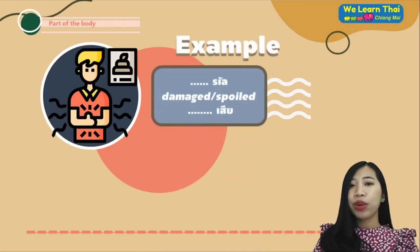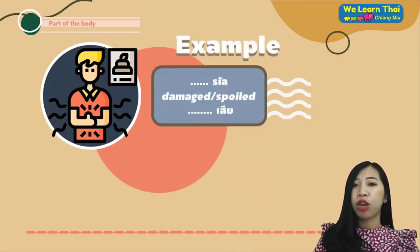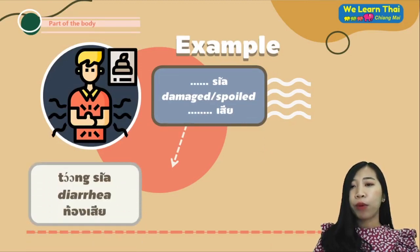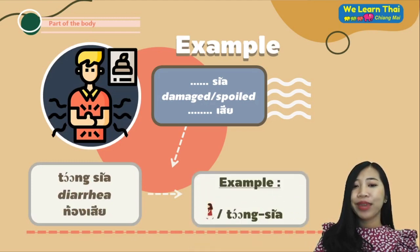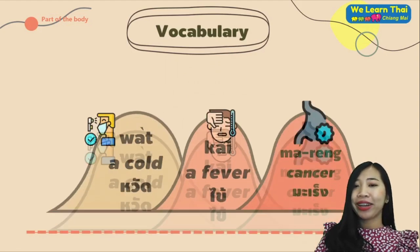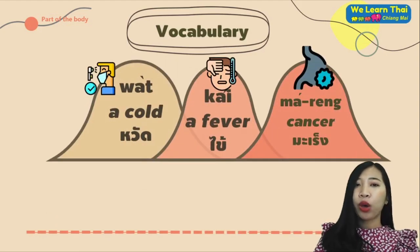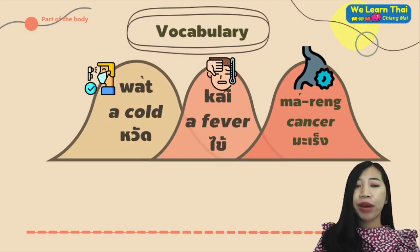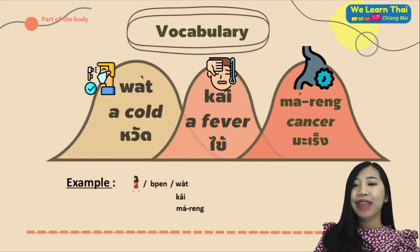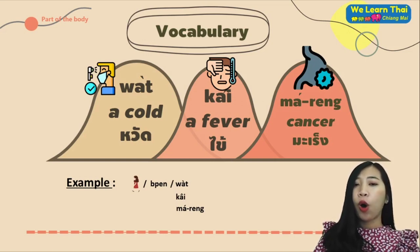Next, we have the word เสีย, which means damage or spoil. For example: ท้องเสีย means diarrhea — ดีฉันท้องเสีย (I have diarrhea). More vocabulary: หวัด (a cold), ไข้ (a fever), มะเร็ง (cancer). For example: ดีฉันเป็นหวัด (I have a cold), ดีฉันเป็นไข้ (I have a fever), or ดีฉันเป็นมะเร็ง (I have cancer).